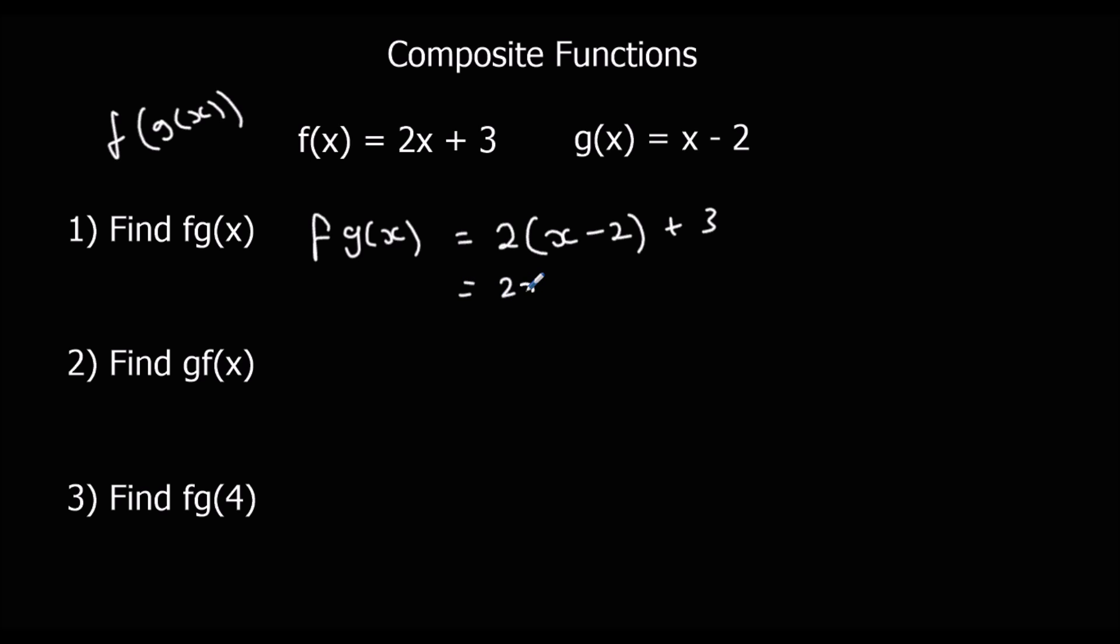Expand the bracket, so 2x minus 4, and simplify, so 2x minus 1. That is f g x, so we put g into f.